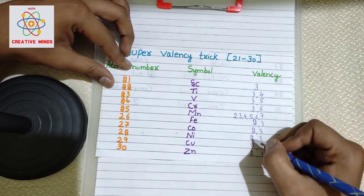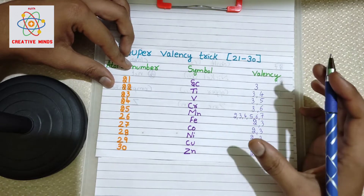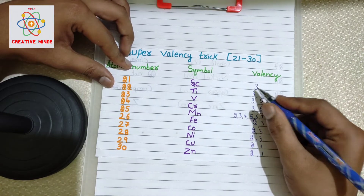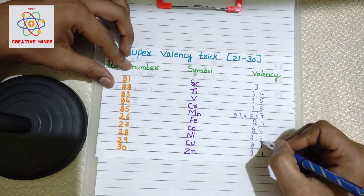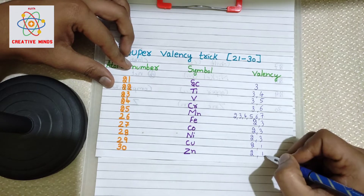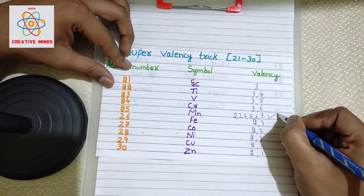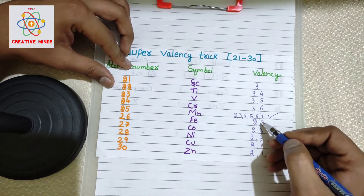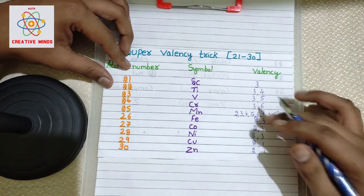So to recap: first write three, then add four, five, six, seven — stop there. Afterwards all remaining elements have two, two, two, two, two as their valences. Elements above manganese have three, three, three as additional valences. Elements below manganese also have three, three, three. The last two unique elements have valency one and one. And manganese has the most valences: two, three, four, five, six, seven.